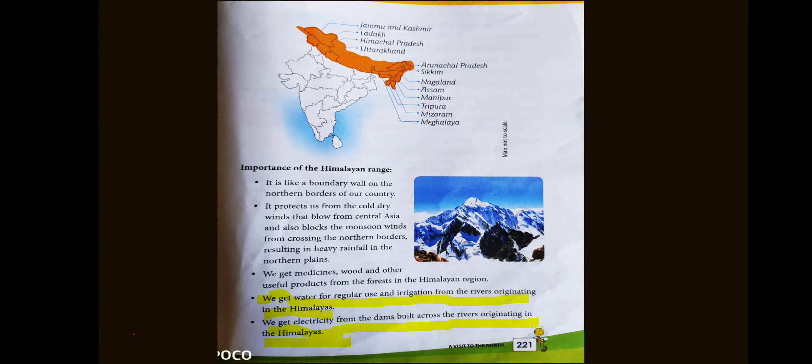The Himalaya Range has whole forests and dams. The Himalaya Range also provides electricity. It forms the border with Central Asia. To summarize: Greater Himalaya is the border with the highest peaks; Middle Himalaya has valleys, rivers, and hill stations; Outer Himalaya has dense forest.